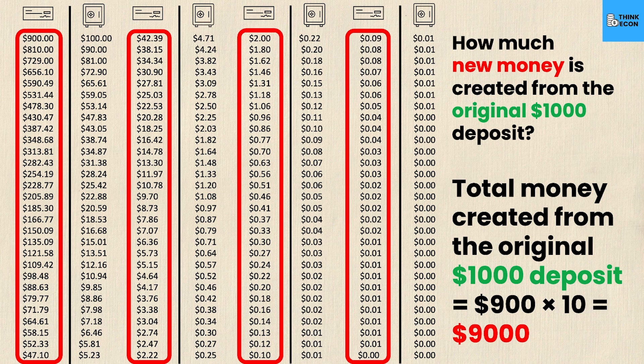This is how the reserve ratio and money multiplier show how much new money is effectively created seemingly out of thin air — through a bank re-loaning 90% of deposits every single time, until there's no more money to loan. Keep in mind this example was just $1,000. Imagine the millions and billions of dollars going through banks every day — this happens to all of that money, and it's just one of the ways money can be created.